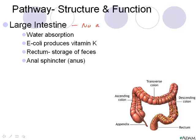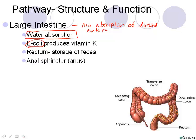In the large intestine, there's no absorption of digested material, but this is where the majority of water absorption takes place. We also have E. coli bacteria in our gut that secretes vitamin K, which can be reabsorbed back into our system. The last part of the large intestine is the rectum — the last few centimeters — where feces is stored and then excreted out through the anal sphincter, which is the third sphincter we've discussed.